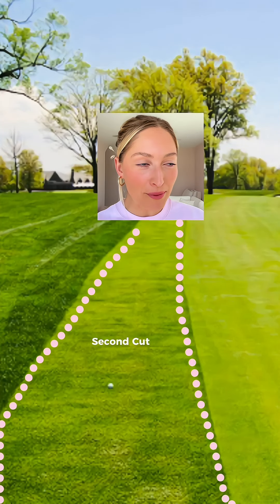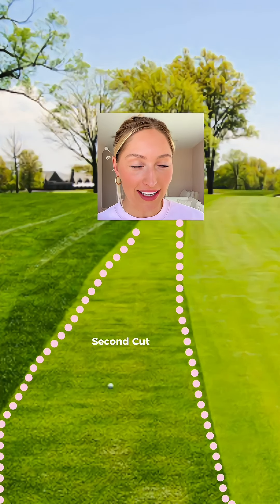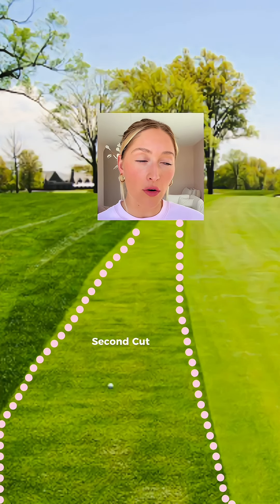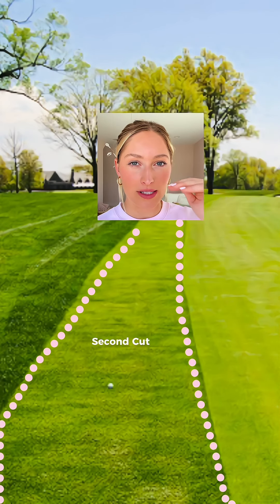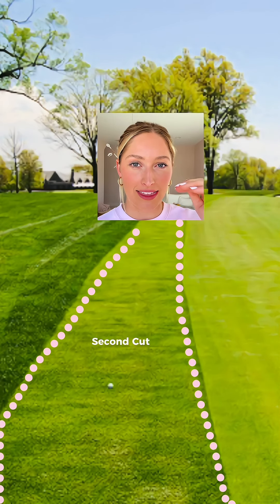There is something called the second cut. Some courses have this, some don't, but it is the layer of grass in between the fairway and the rough. So it's like an in-between grass length.